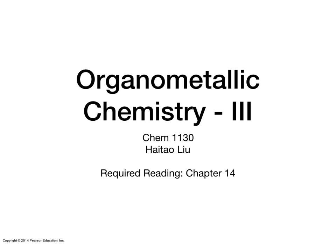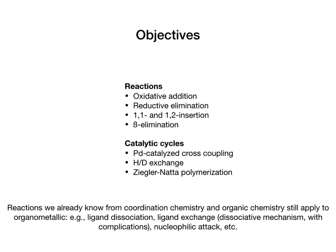This lecture is the last of the three organometallic chemistry video lectures and the last one in this term. We're going to discuss chemical reactions that are unique to organometallic compounds and catalytic cycles using organometallic catalysts. The required reading is in chapter 14. I'm going to go over oxidative addition, reductive elimination, 1,1 and 1,2 insertion, as well as beta elimination, and then look at three different catalytic cycles based on those reactions.